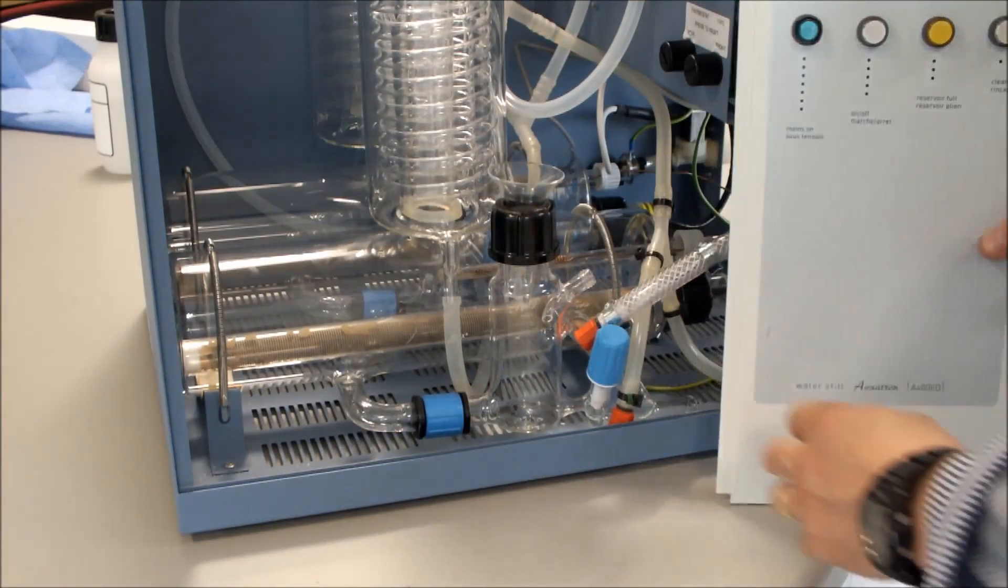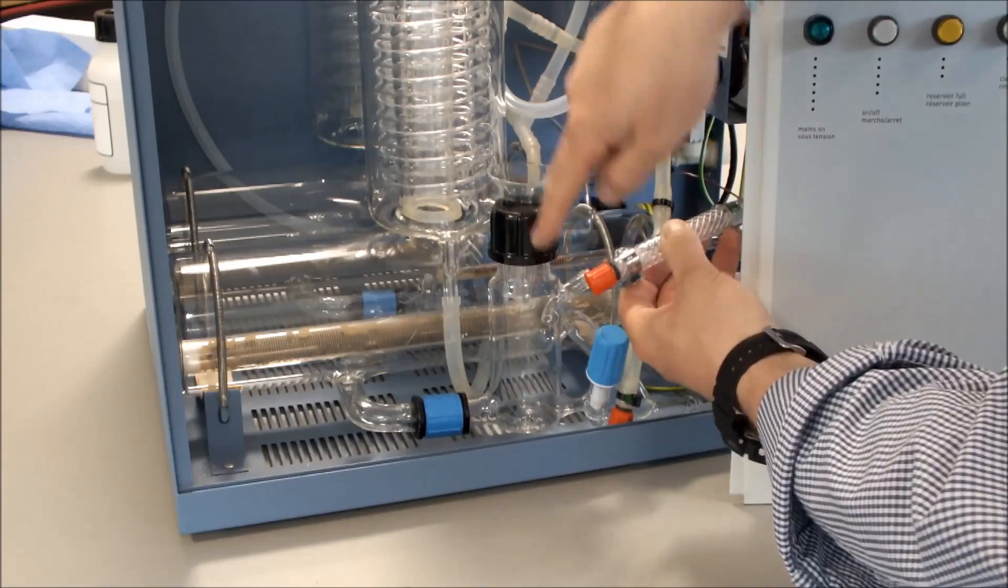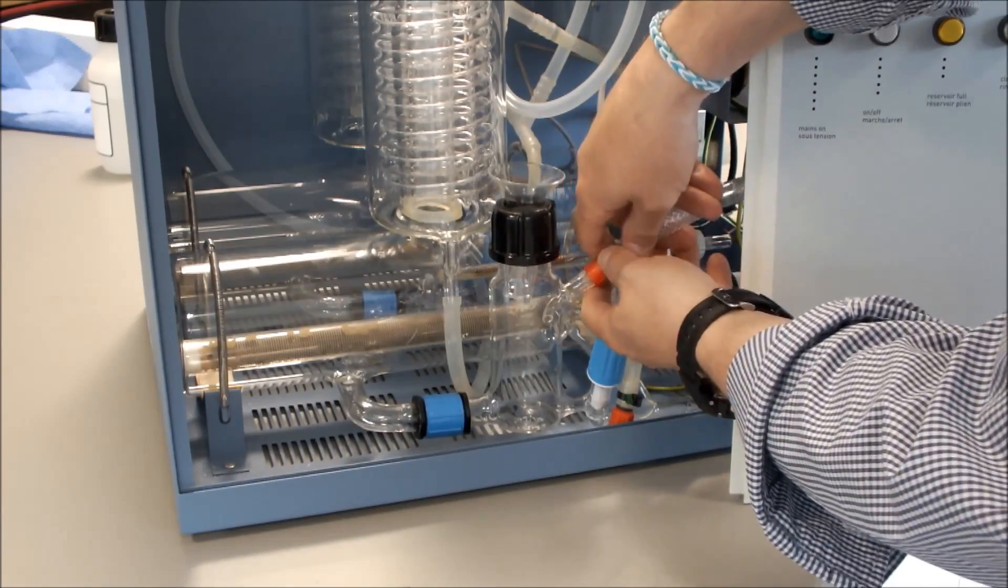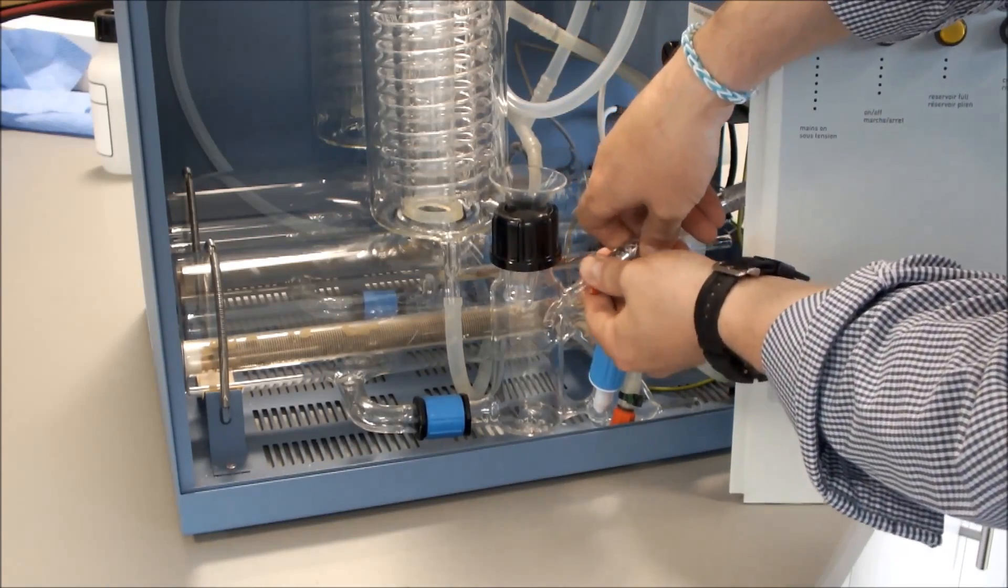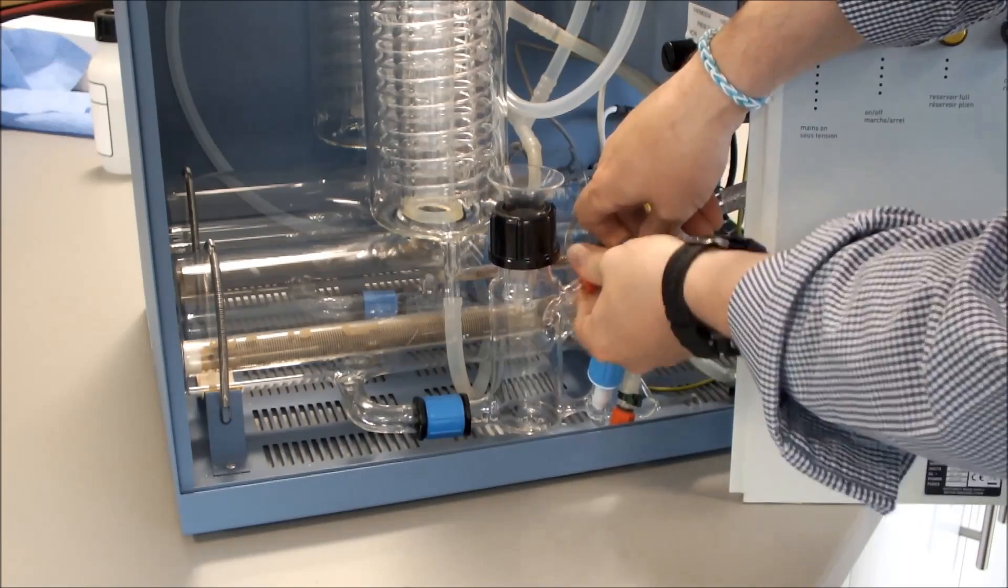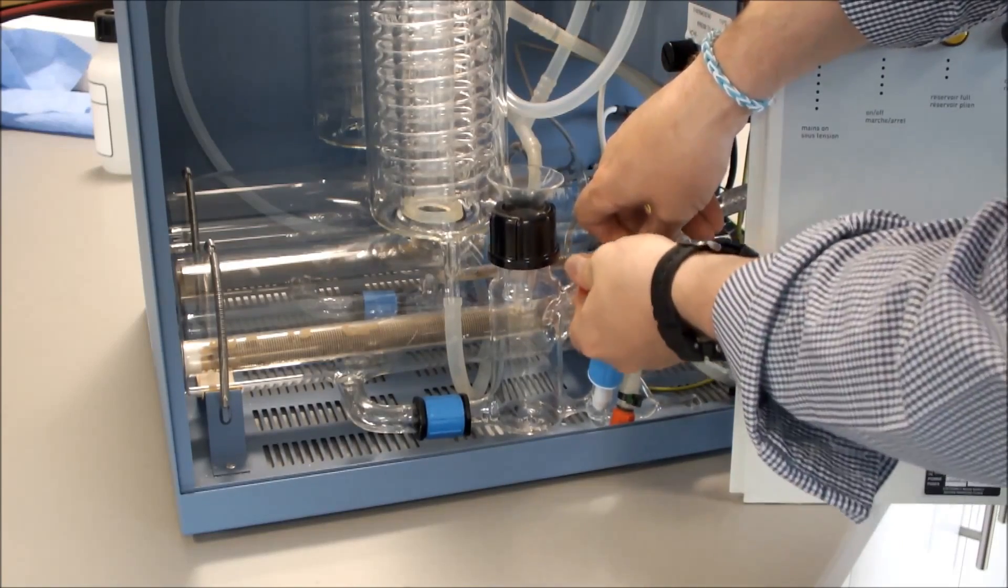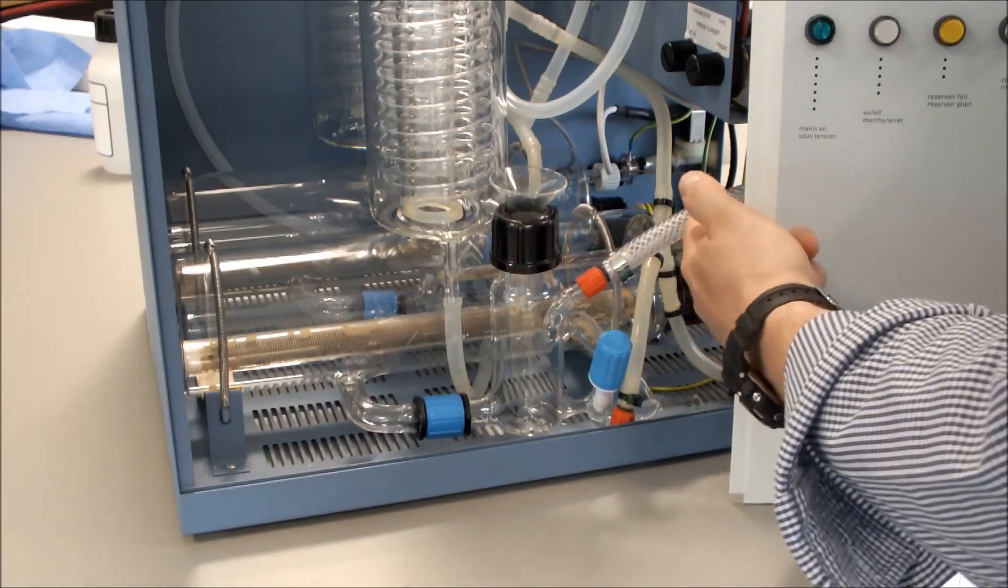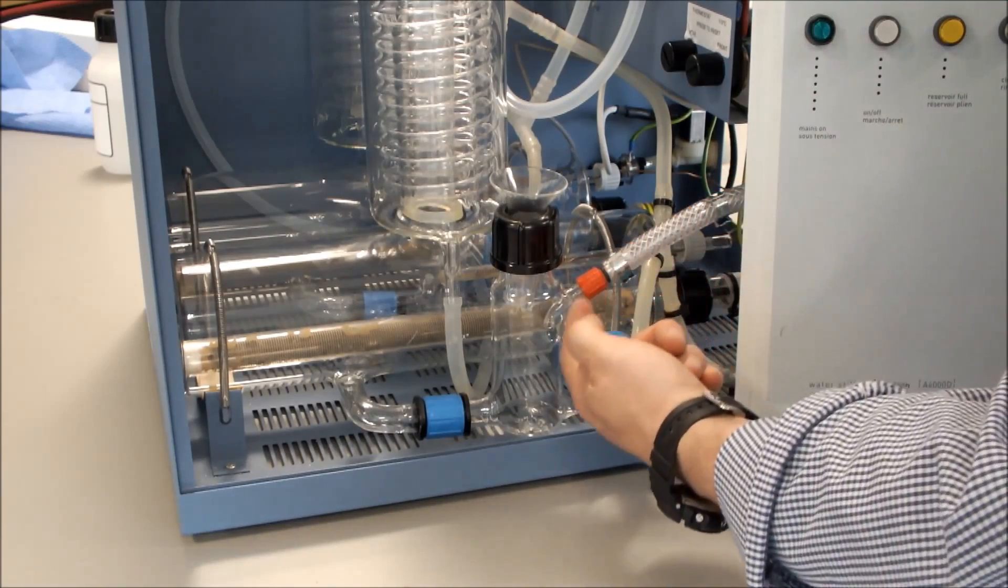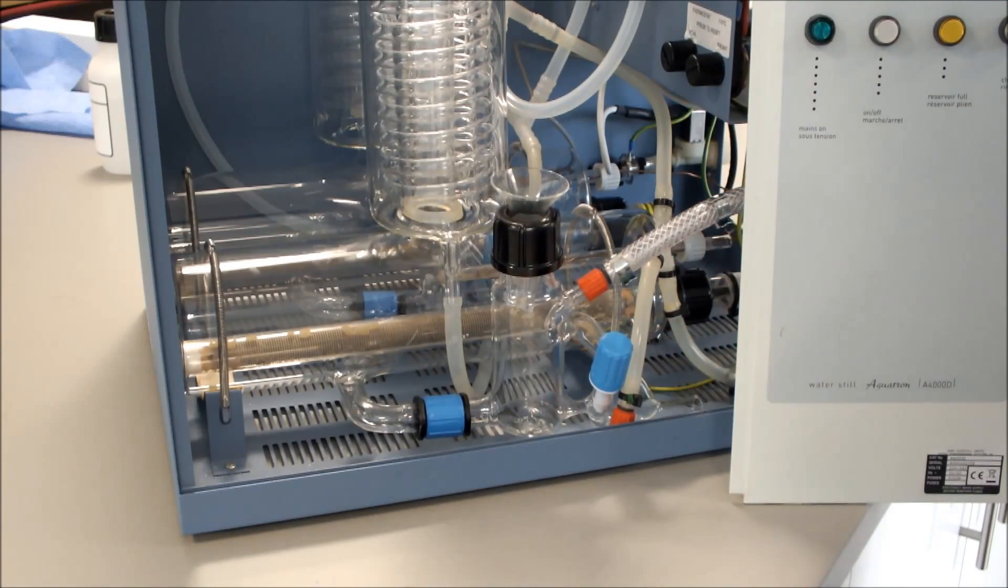The next thing is to connect our deioniser pipe assembly to our boiler control. That fits on there and is tightened up. The deionised pre-treated water will then come into our boiler level control.